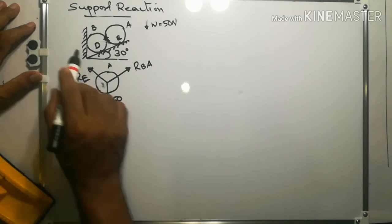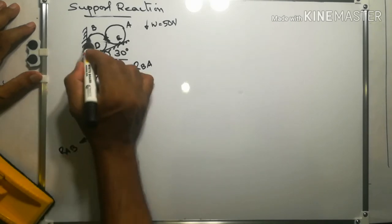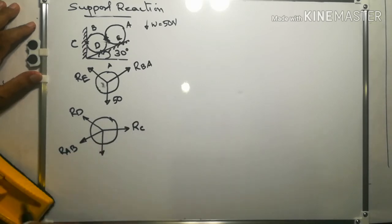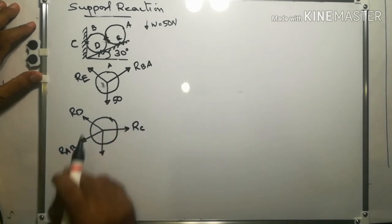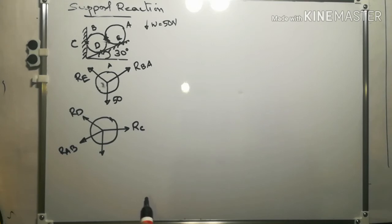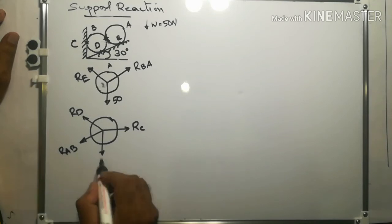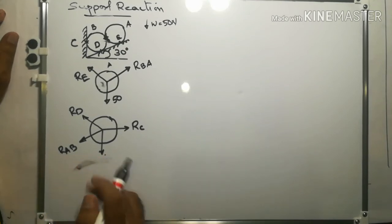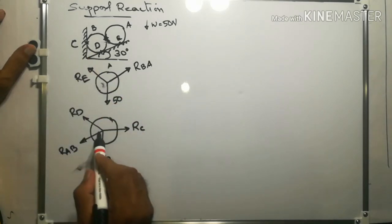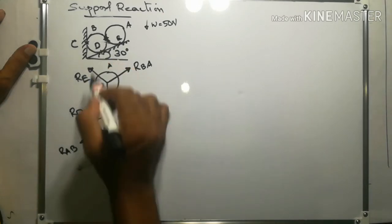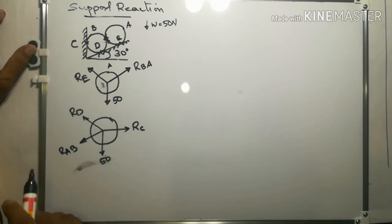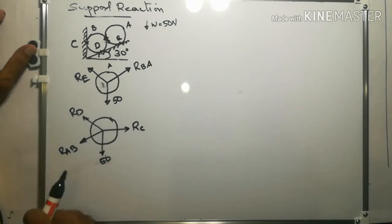There will be one more force at the wall, at point C. The reaction RC will be horizontal. So for ball B, there are four forces acting: W equal to 50 Newton as the weight, the reaction from the wall at point C (RC), the reaction at point D on the inclined plane (RD), and RAB — the reaction from ball A to the center of ball B.